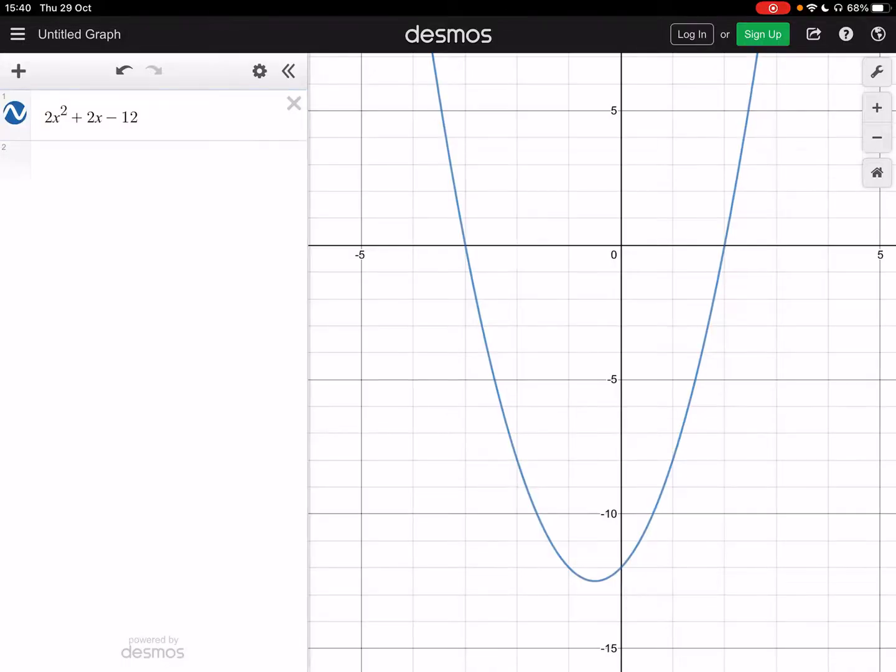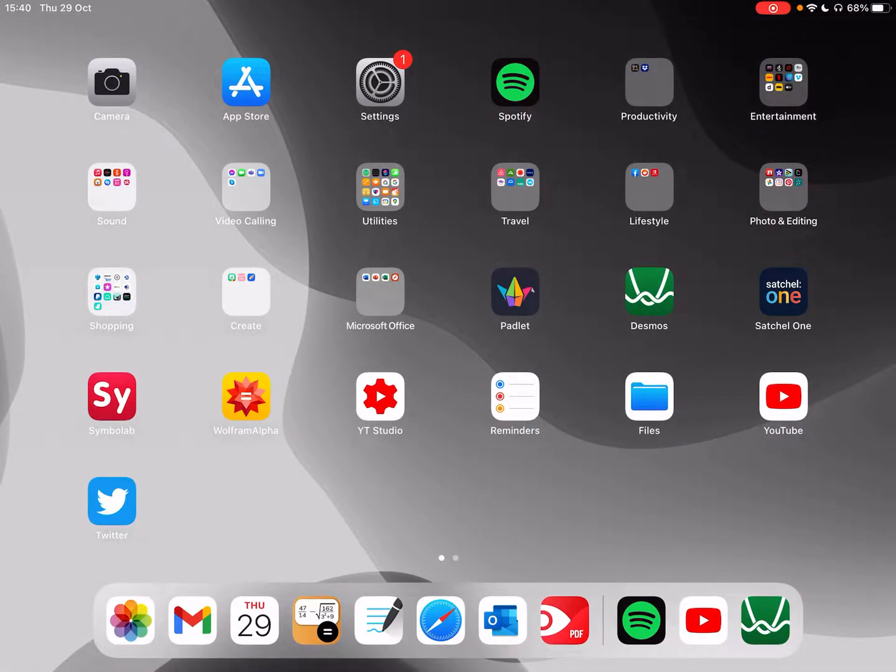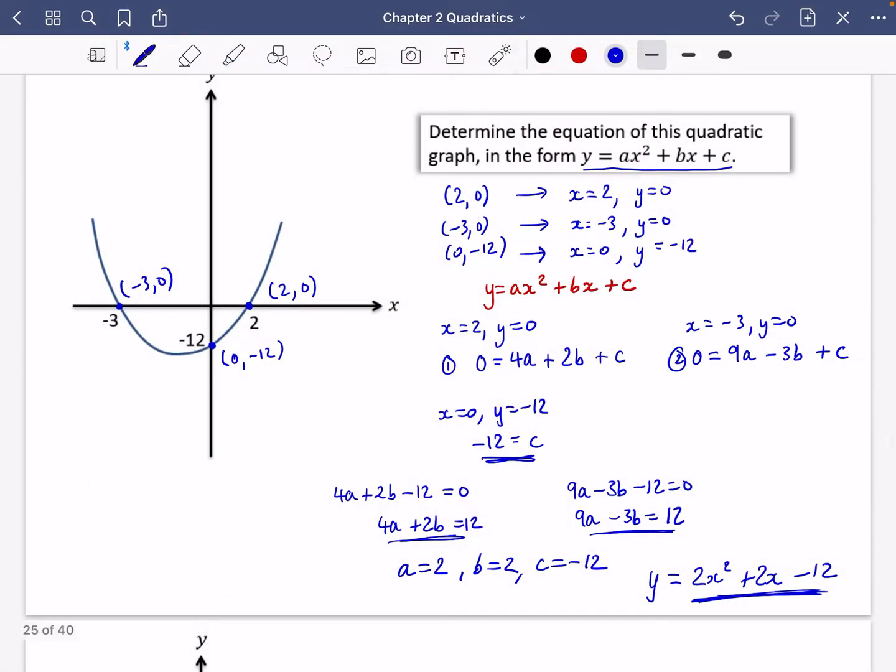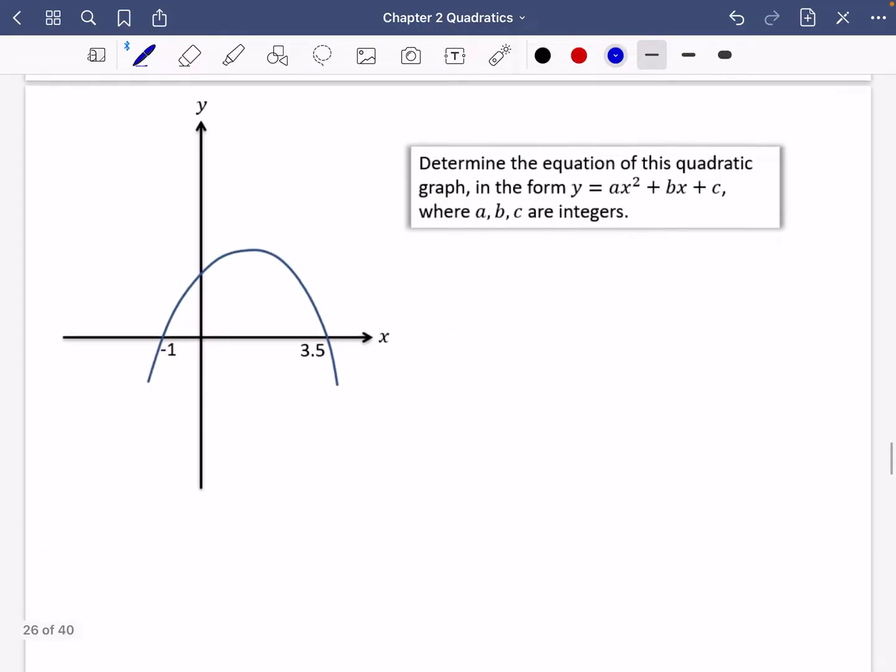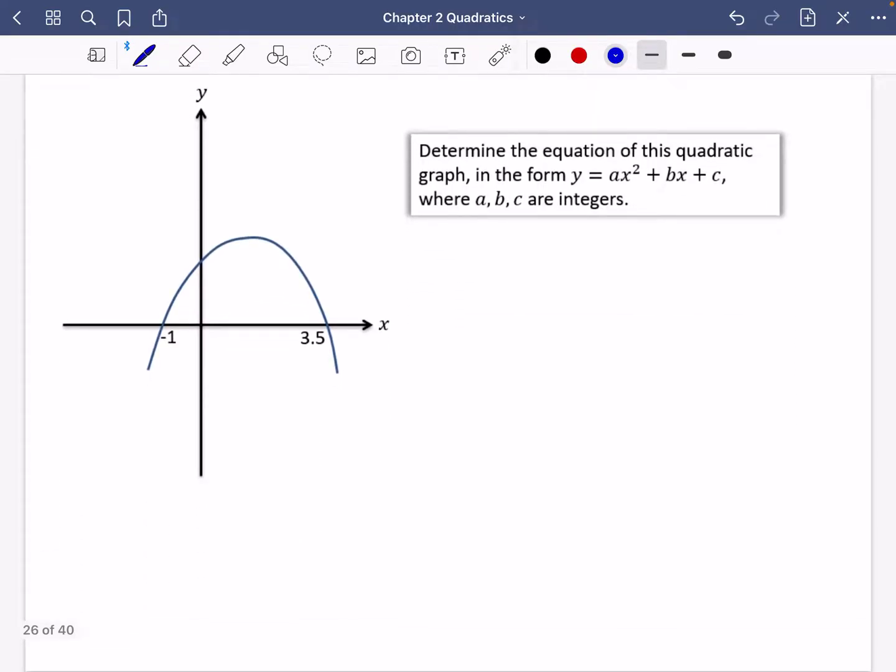So this is my preferred method. Other people may like to do this in different ways. This is my preferred method. You should do this if you can't figure it out. So determine the equation of this quadratic graph in the form blah, blah, blah again. So this one, it just says where a, b and c are integers.